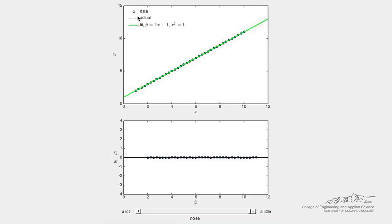These data are fit with a linear model. The line of best fit is shown in green in the top plot, and the residuals of this fit are shown in the bottom plot. The equation of the line of best fit and the r squared value are also displayed.